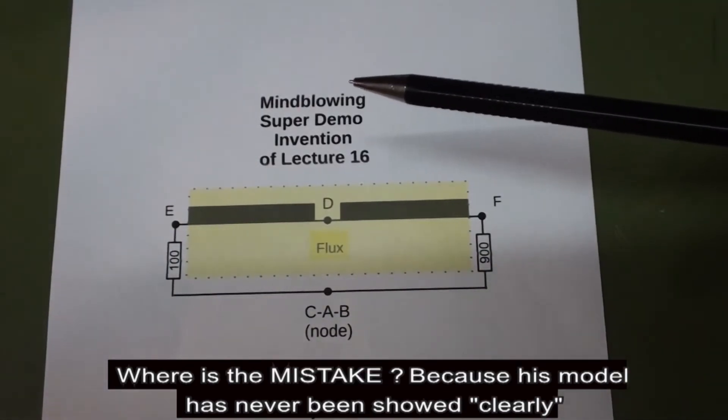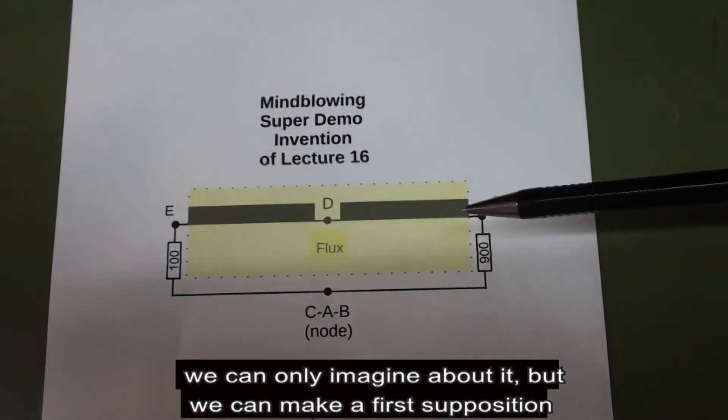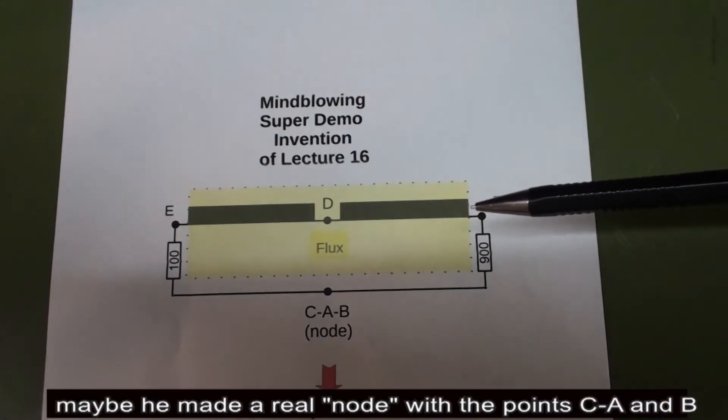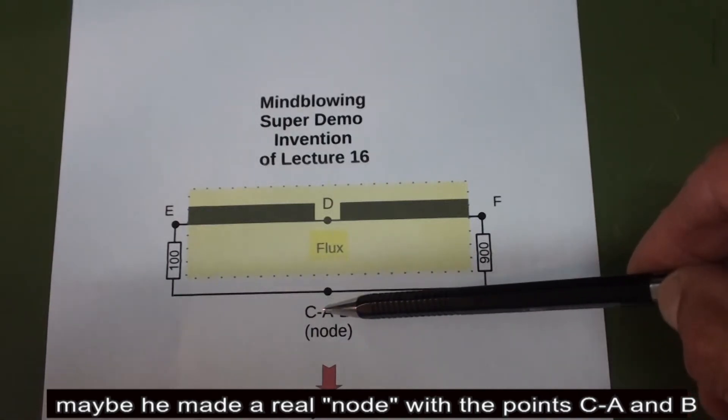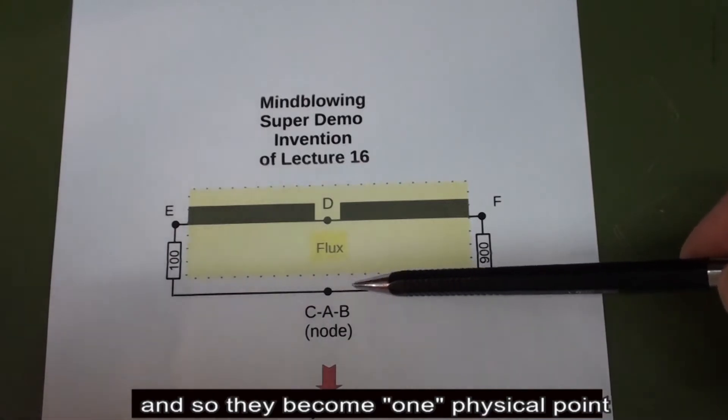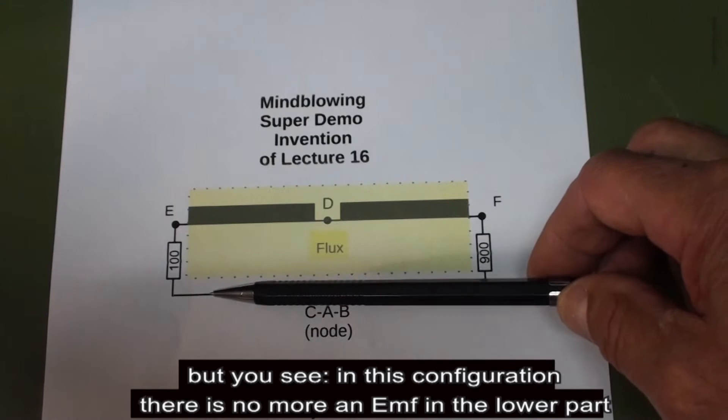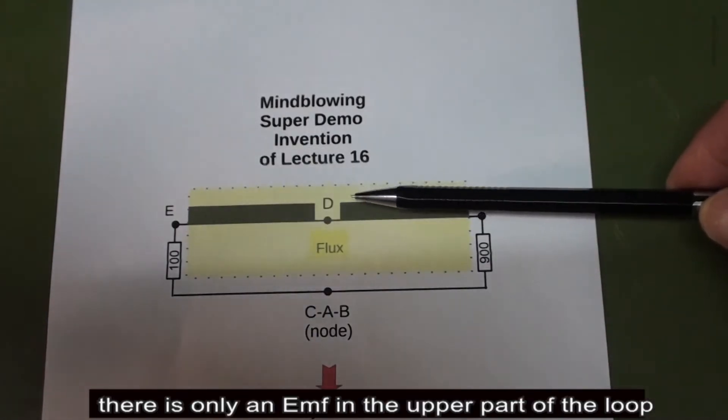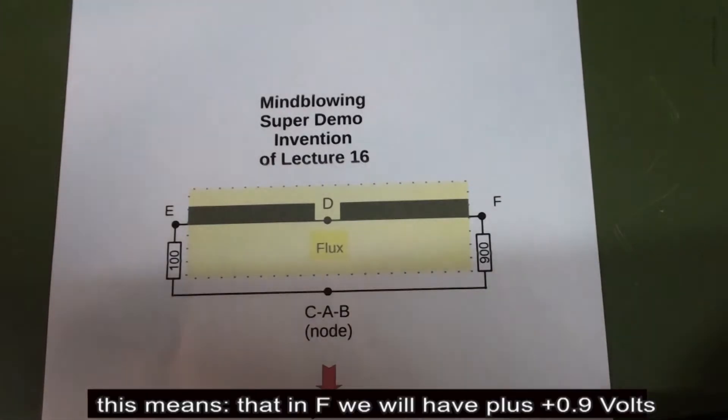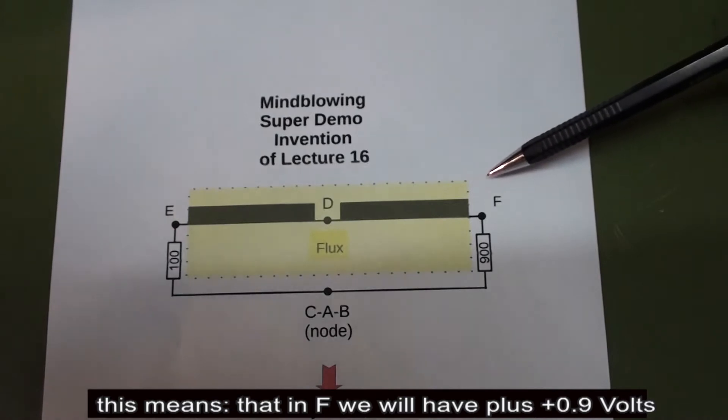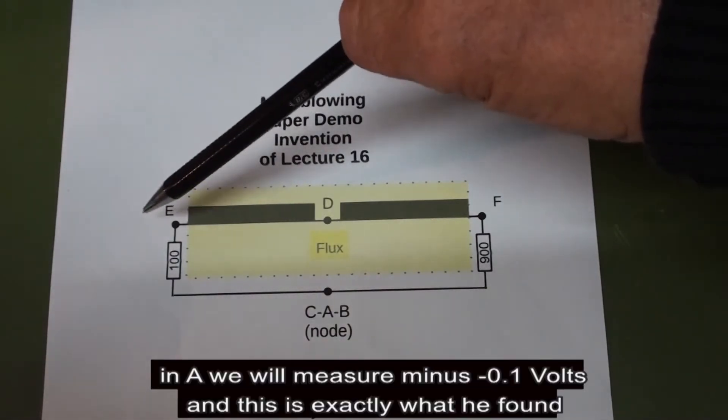Where is the mistake? Because this model has never been shown clearly, we can only imagine about it. But we can make a first supposition. Maybe he made a real node with the points C, A, and B, and so they become one physical point. But you see, in this configuration there is no more an EMF in the lower part. There is only an EMF in the upper part of the loop. It should be half the value, but let's suppose it's 1 volt too. This means that in F you will have plus 0.9 volts, and in E we will measure minus 0.1 volt.